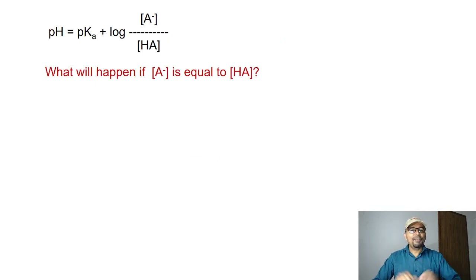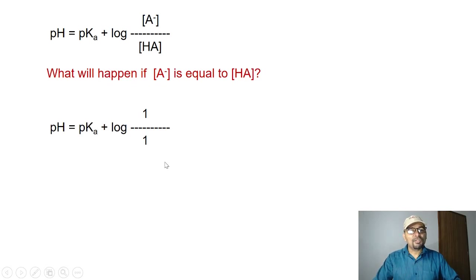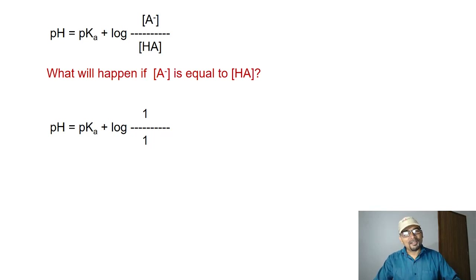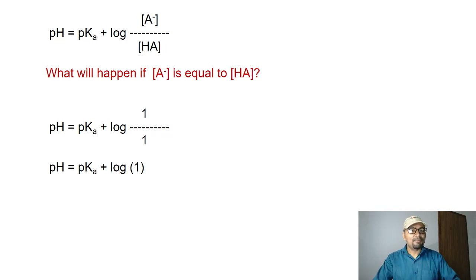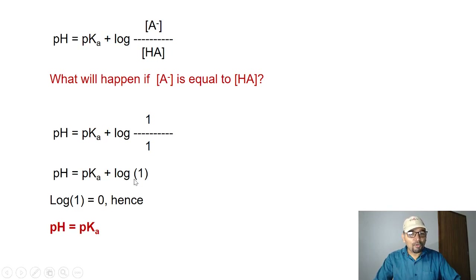Now let us understand what will happen if A⁻ and HA are exactly the same concentration and we substitute that into the equation. We get pH = pKa + log(1/1), which simplifies to pH = pKa + log 1. Since log 1 equals 0, substituting that gives us pH = pKa.